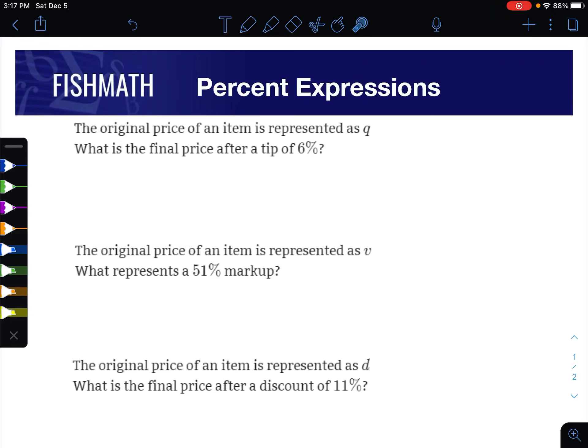We're going to talk about percent expressions. In each one, we've got a variable that represents the original cost. In the first case, it's going to be q, so we're going to find the final price after a tip of 6%. Percents are always out of 100, so 6 out of 100.